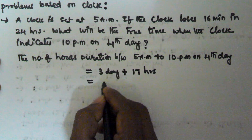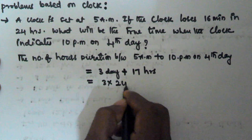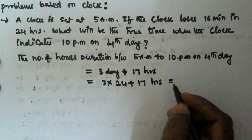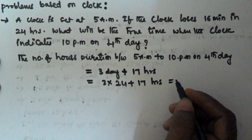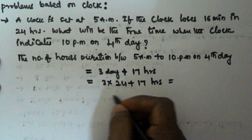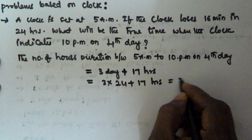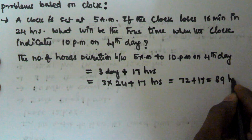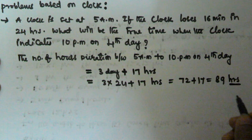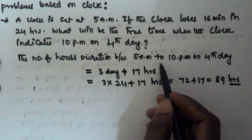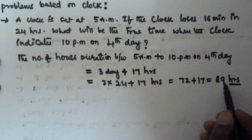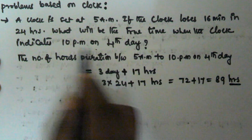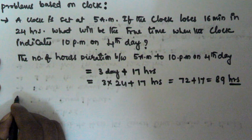So 3 days is equal to 3 × 24 = 72 hours, plus 17 hours, giving us 89 hours total. So the total number of hours duration between 5 a.m. to 10 p.m. on the 4th day is 89 hours.